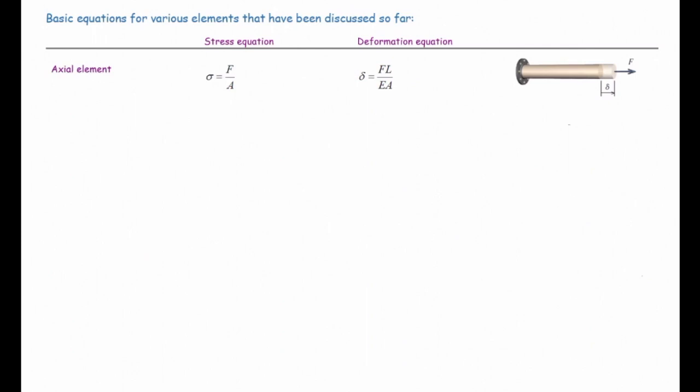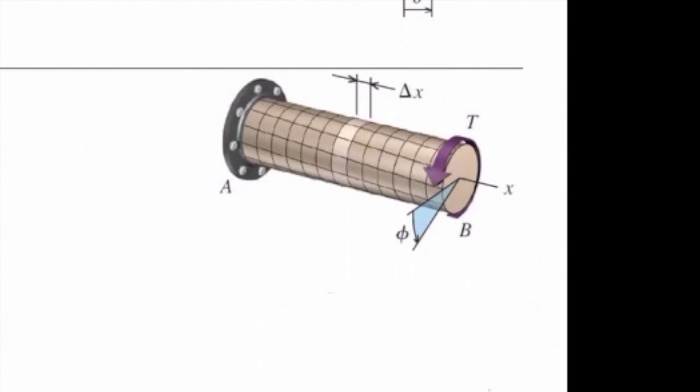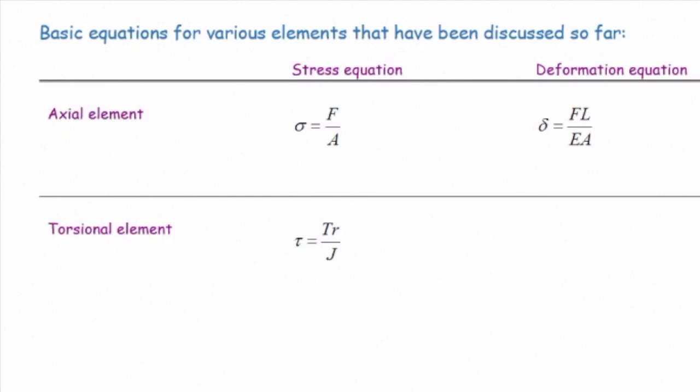Similar to that, the second element we discussed in class was torsional elements — one element subjected to torque. For that element, we introduced the stress equation tau = TR over J, which is shear stress. And for deformation or twist, we introduced phi, the angle of twist, equal to TL over GJ.